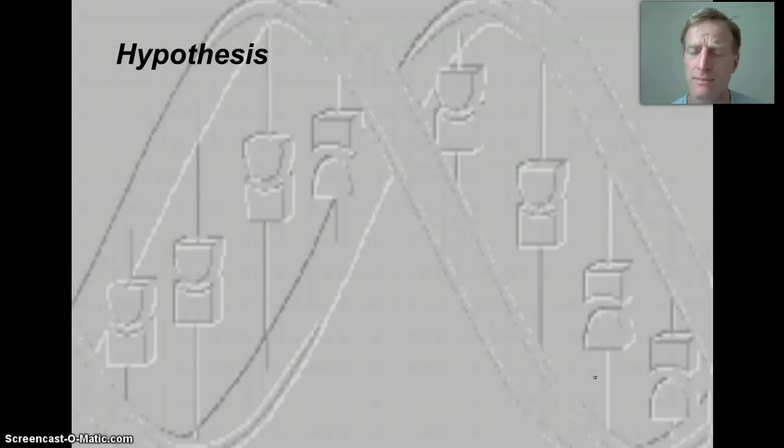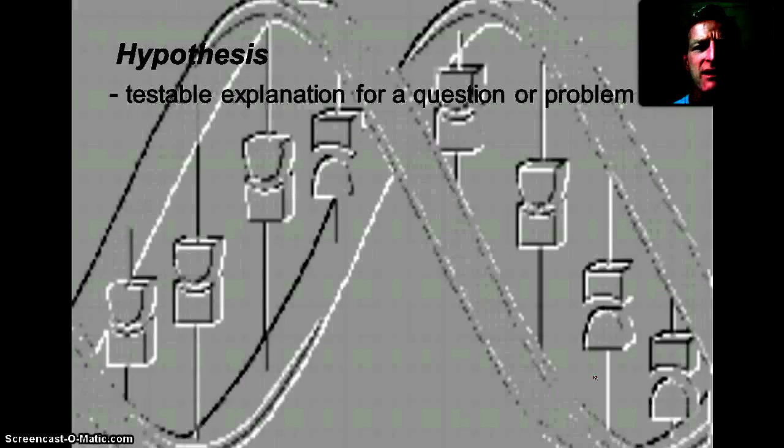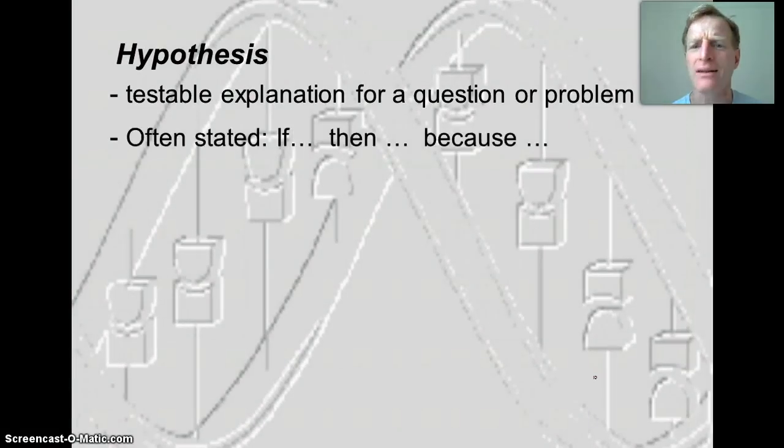So in a hypothesis, we said is generally, you may have heard it as an educated guess. We don't really want to say it's a guess. We want to say it's a testable explanation for a question or problem. And it's based on some background information that we have. We're not just randomly guessing about things.